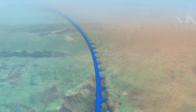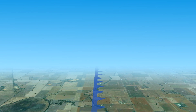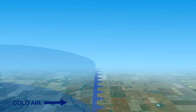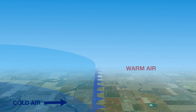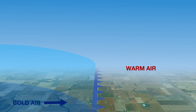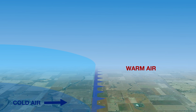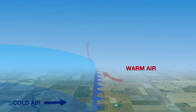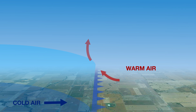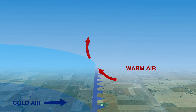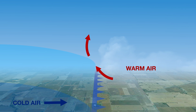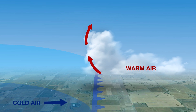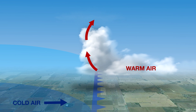As a cold front moves over an area, the colder air behind the change is actually quite dense and cold. It wedges in underneath the warmer air ahead of it. This warmer air ahead will actually rise, and as it rises in the atmosphere, it starts to cool and condense into cloud droplets. These cloud droplets can then form cloud and hence rainfall.